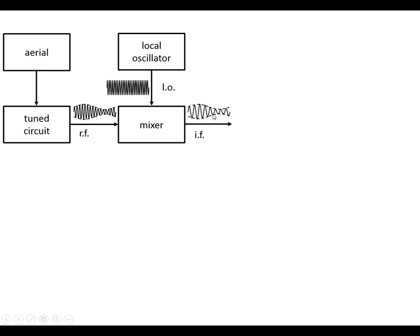What comes out of here is called the intermediate frequency, which is the local oscillator frequency minus the radio frequency signal. So we get a copy of the radio frequency signal at a fixed frequency band. Then it goes into the intermediate frequency filter which has a very sharp cutoff, and this provides the selectivity for the receiver.